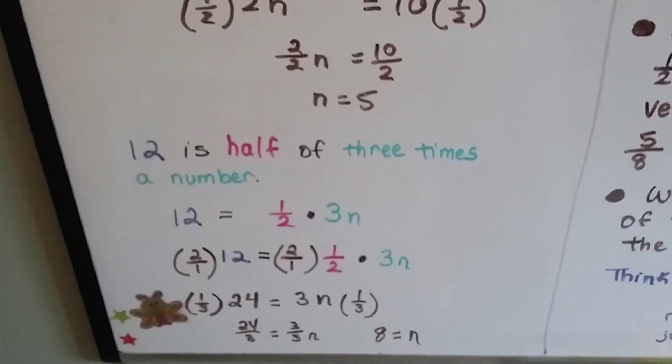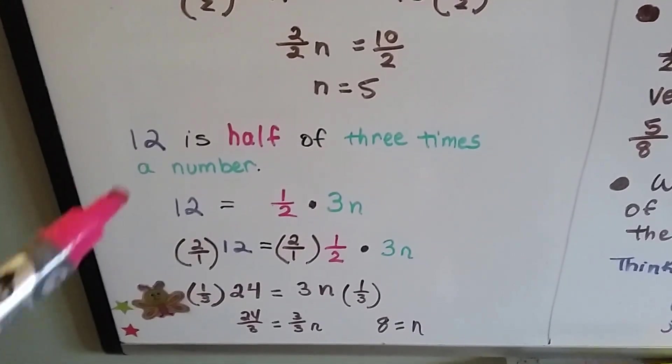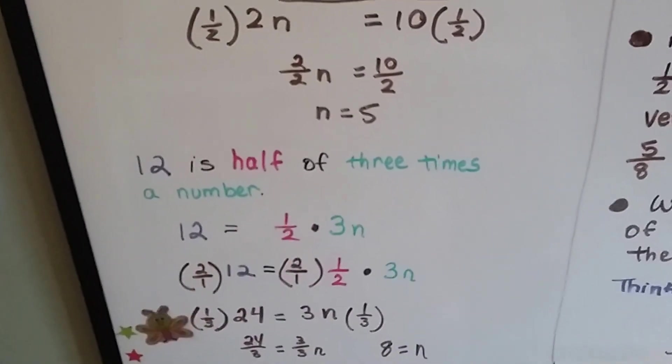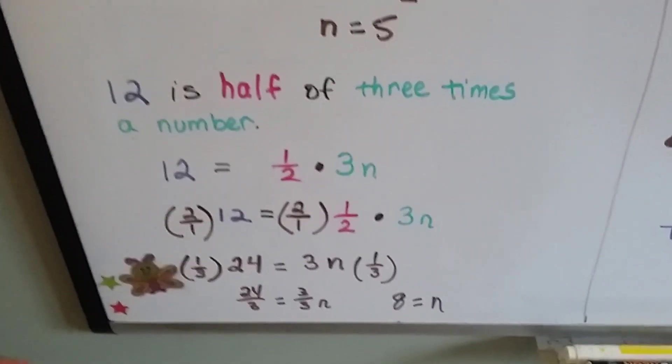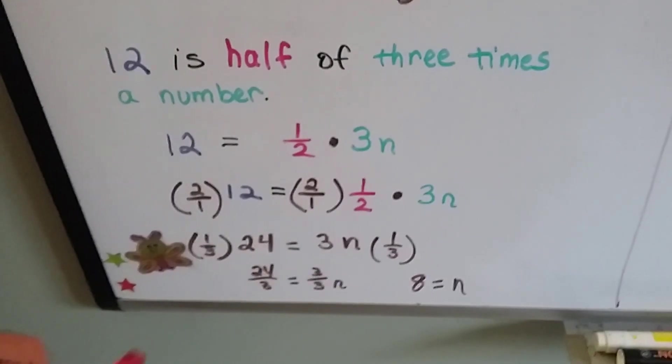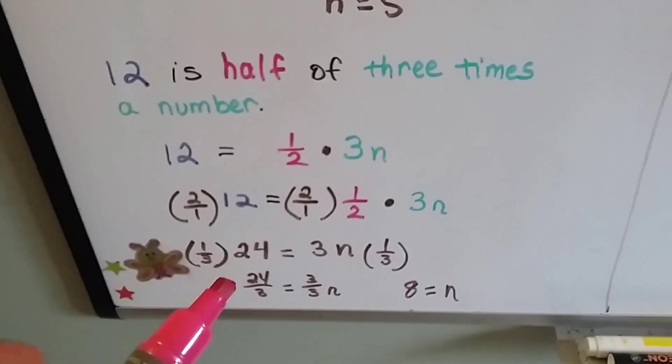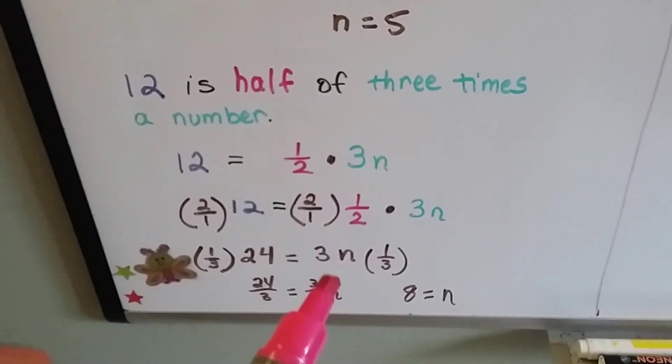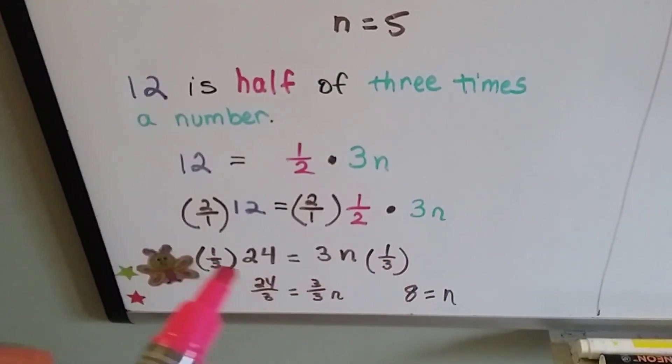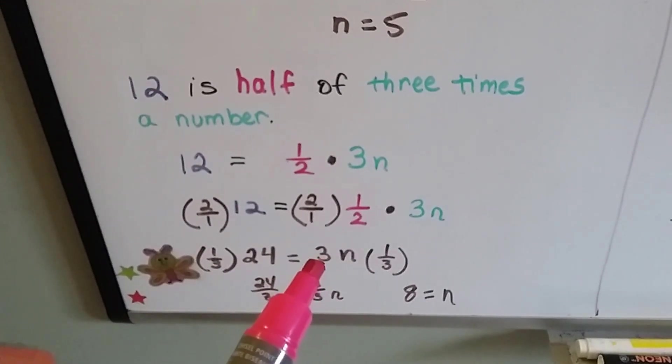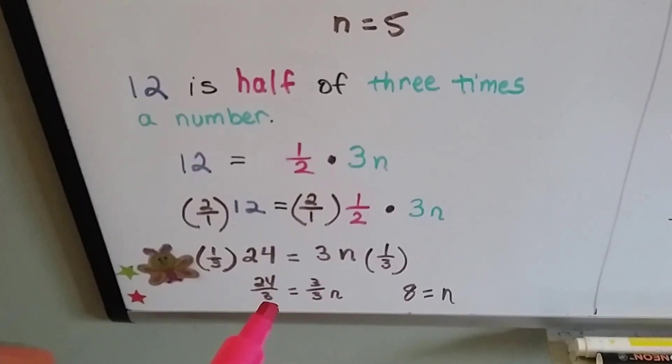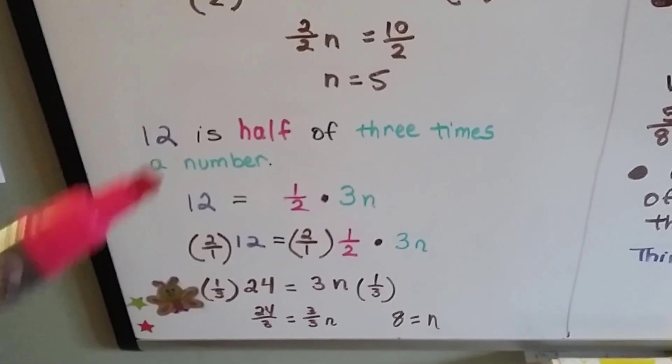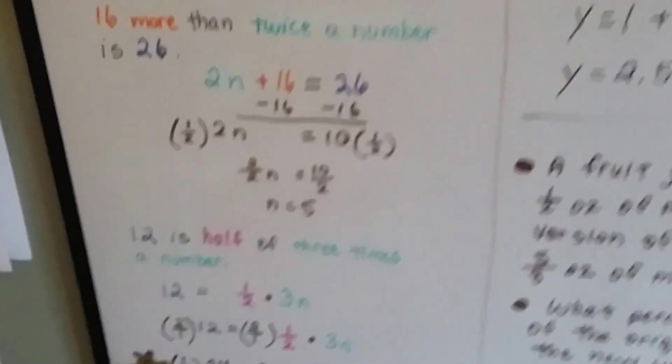If you see 12 is half of 3 times a number, well, 12 equals half times 3n. We can use the multiplication property of equality to multiply both sides by the reciprocal of a half, and we can start isolating this 3n and the n. We can do it again and multiply each side by the reciprocal of the 3. And we find out that n equals 8. So, just use the words as clues to how to write the equation.